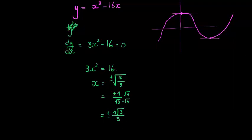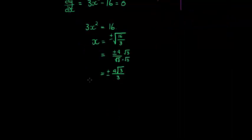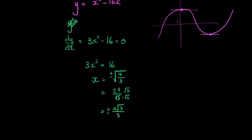So those would be my two turning points. That's the x coordinate. One would be minus 4√3/3, the other one would be plus 4√3/3. Obviously, the one with the negative will be further left, the one with the positive would be further right.